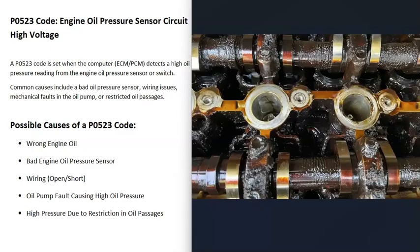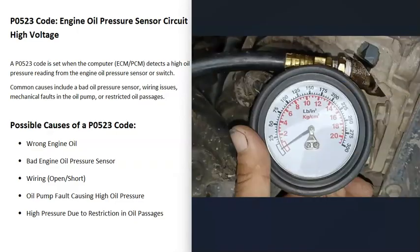A common diagnostic method is to use an oil pressure gauge. Remove the oil pressure sensor and screw the gauge in at that location, then start up the engine and check the oil pressure reading. Every engine has a different rated oil pressure, so you'll need to look that up. If the pressure is running too high, you know it's not the sensor or wiring — there's a mechanical issue, like a bad oil pump or restricted oil passages inside the engine.